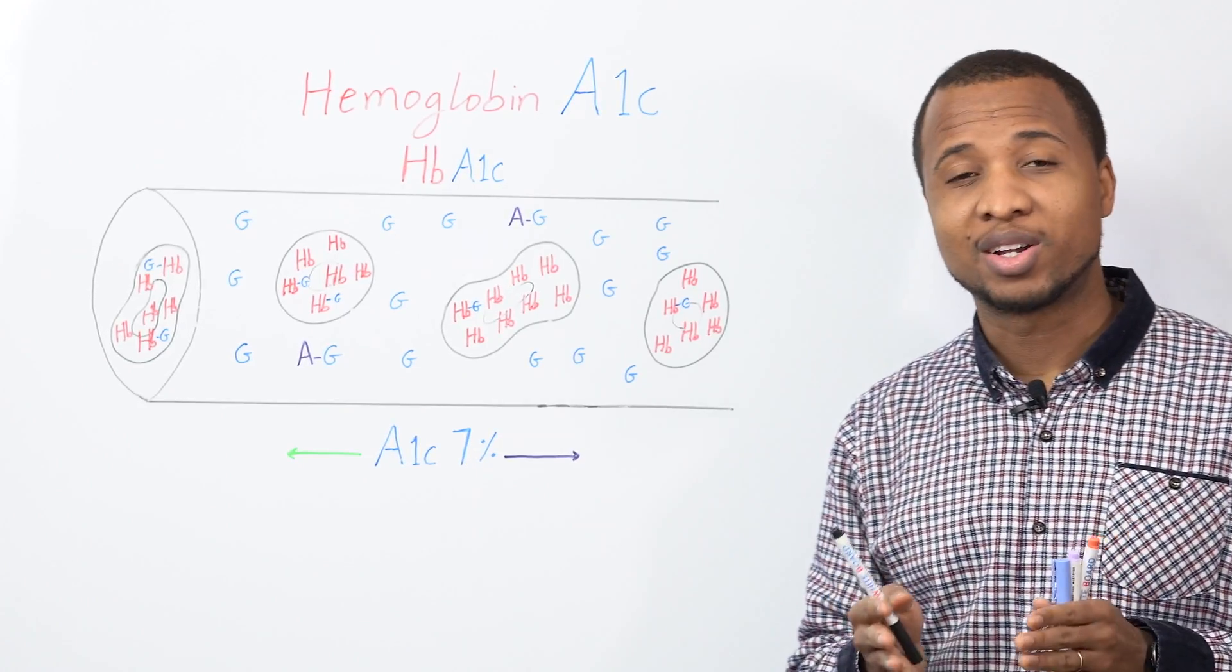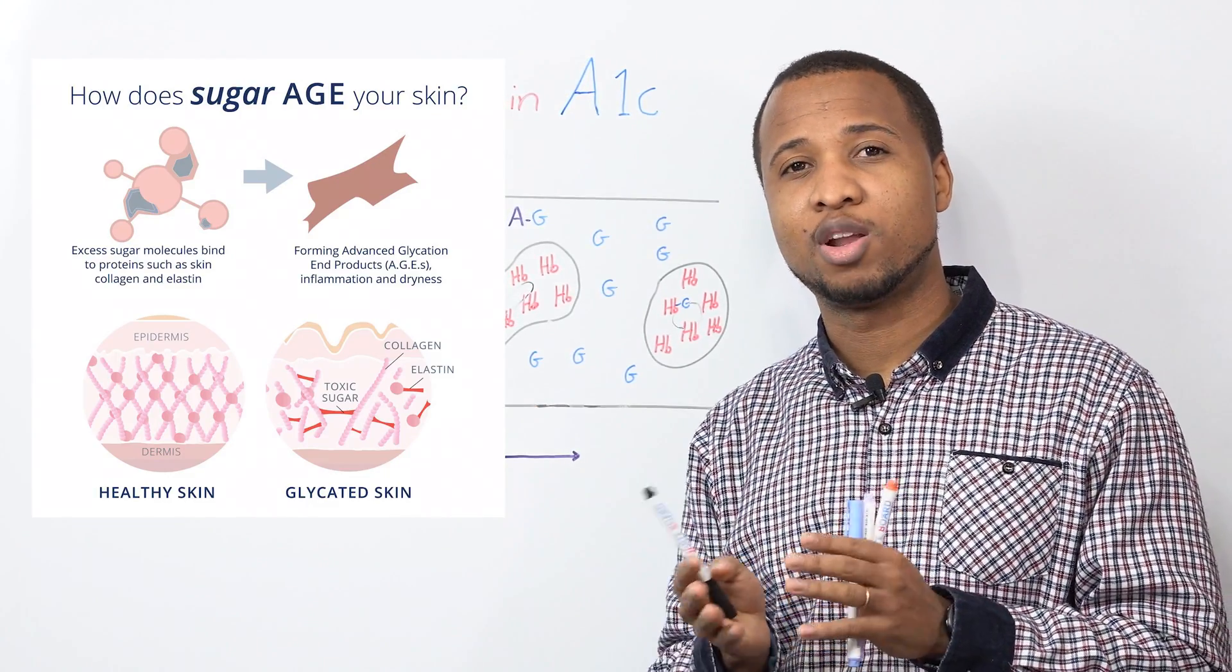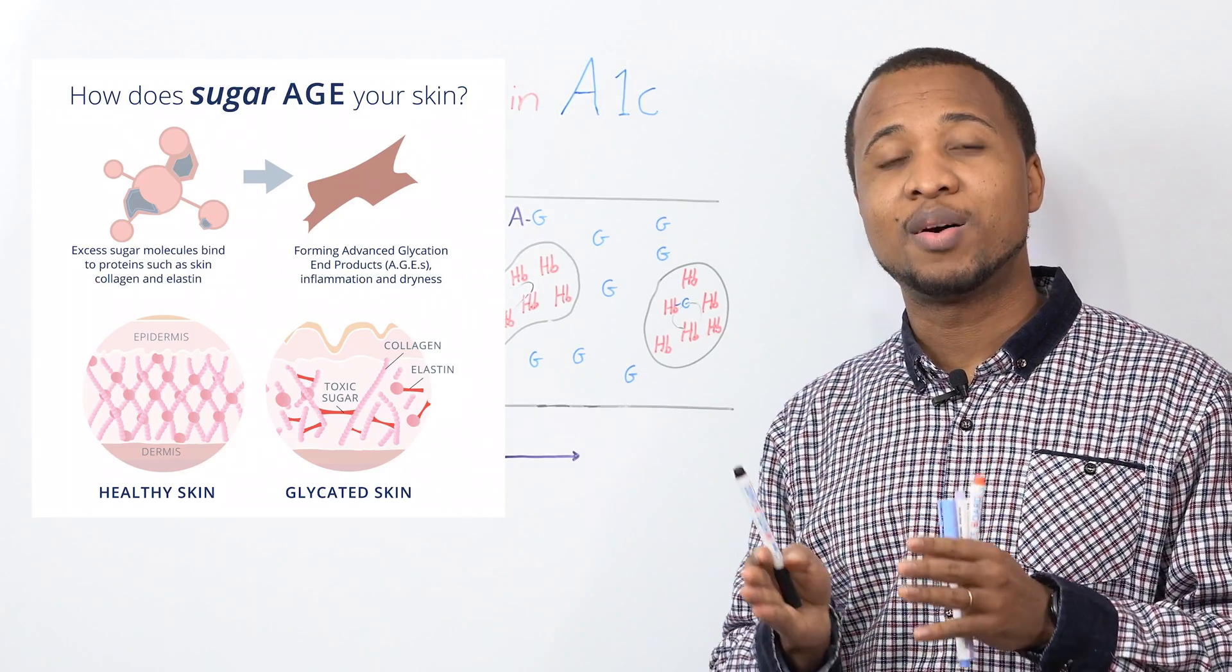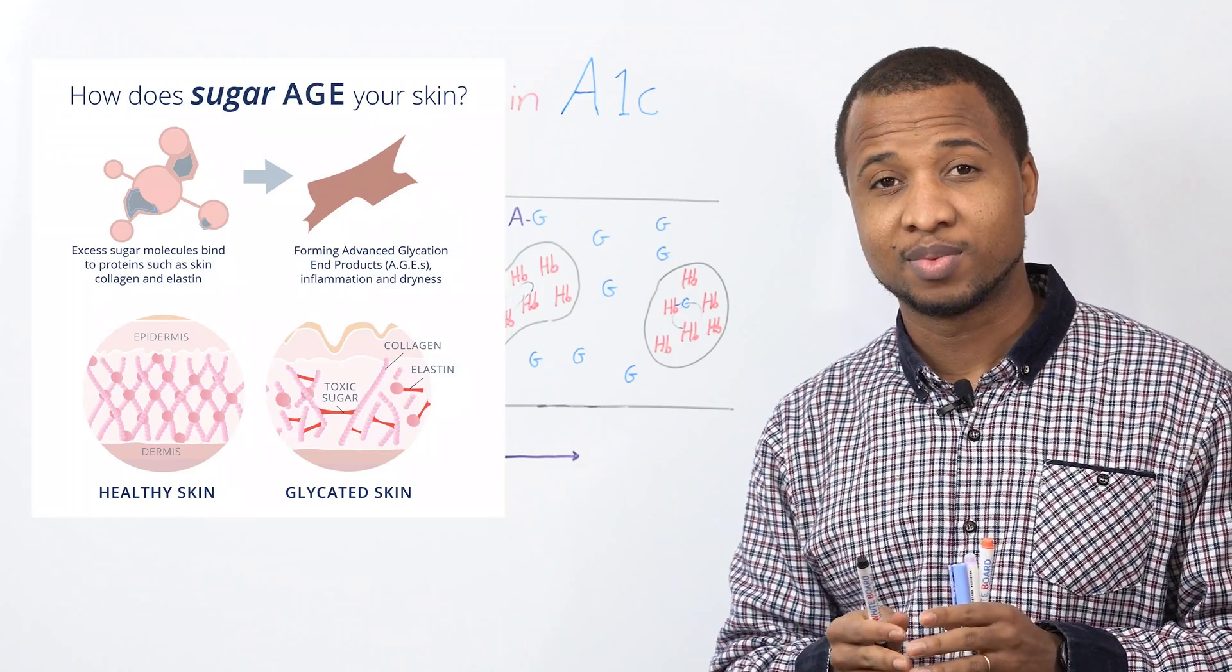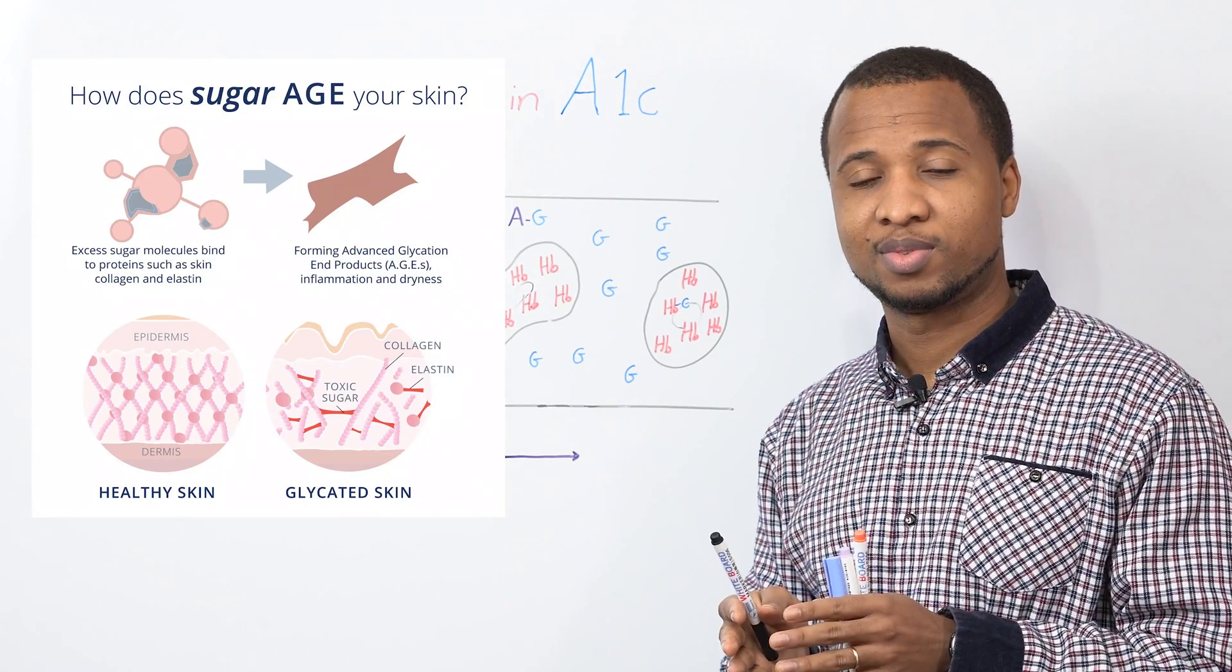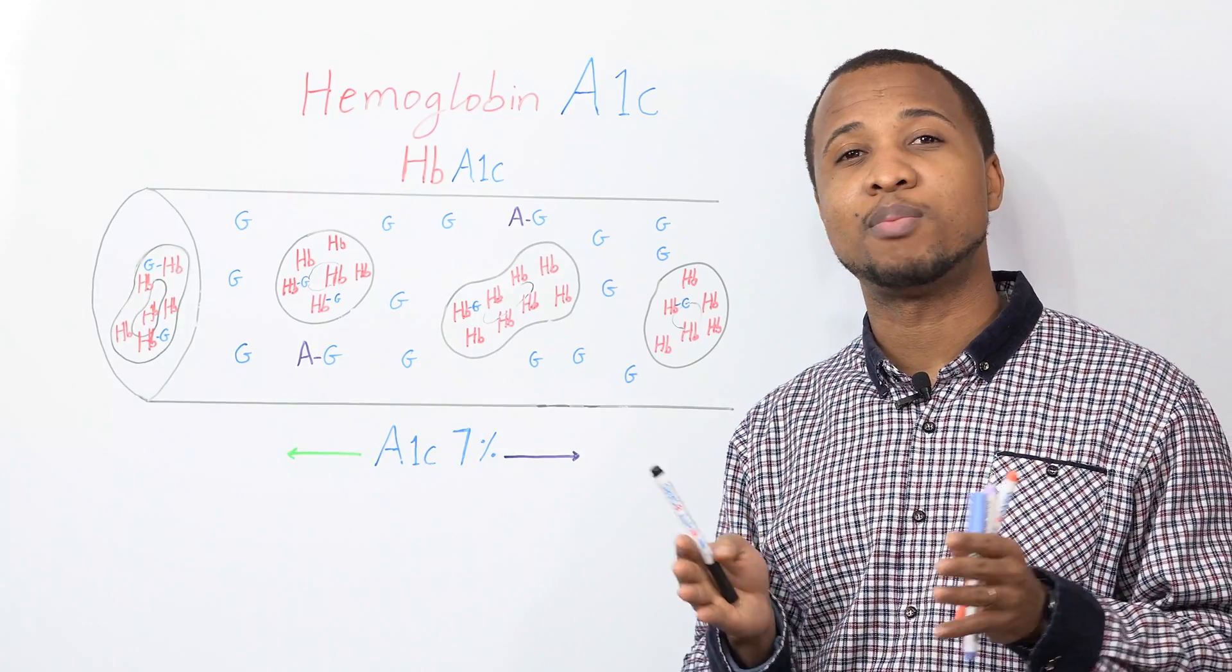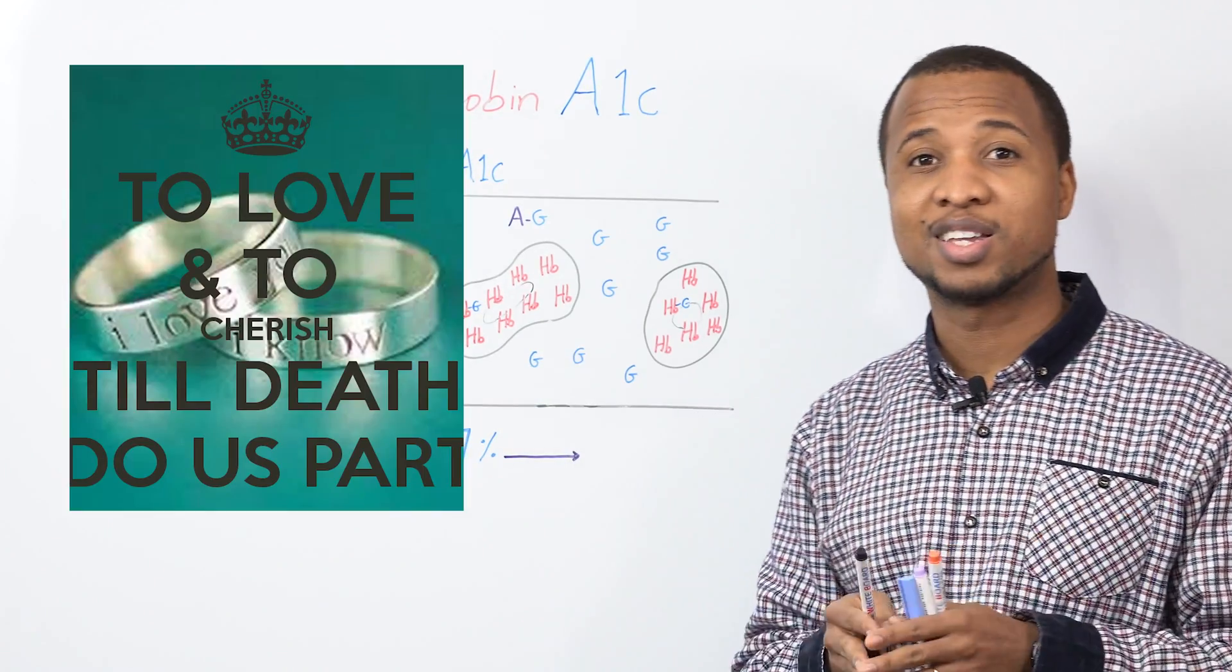And why am I telling you about glycation? Because when glucose attaches to a molecule, to another molecule, without enzymes forcing them, that we call glycation, is an irreversible relationship. It's just like the way marriages are supposed to be, till death do us part.